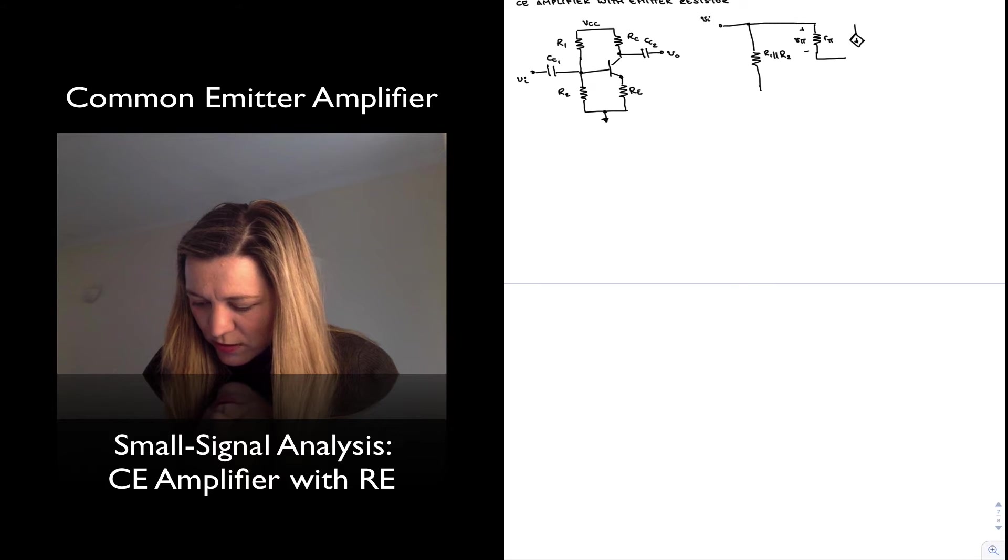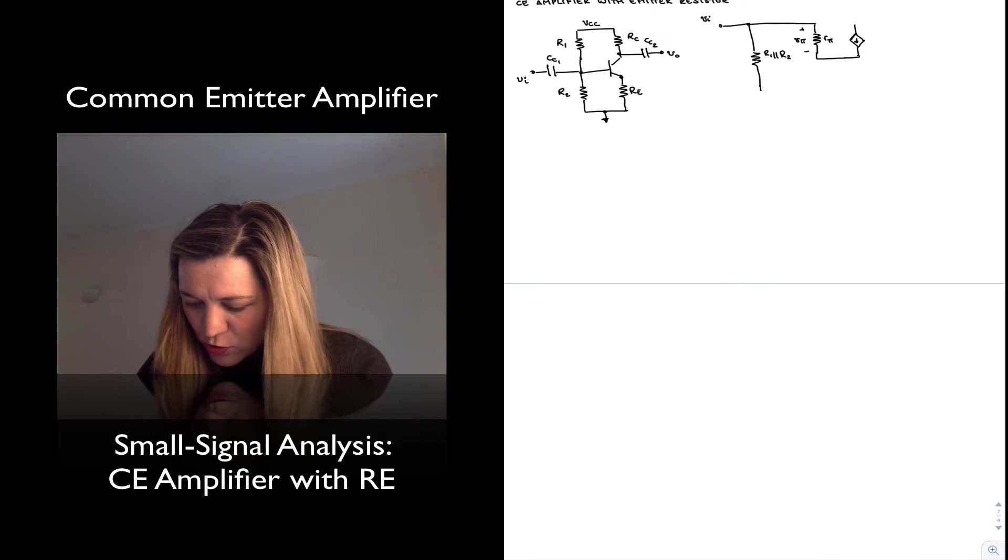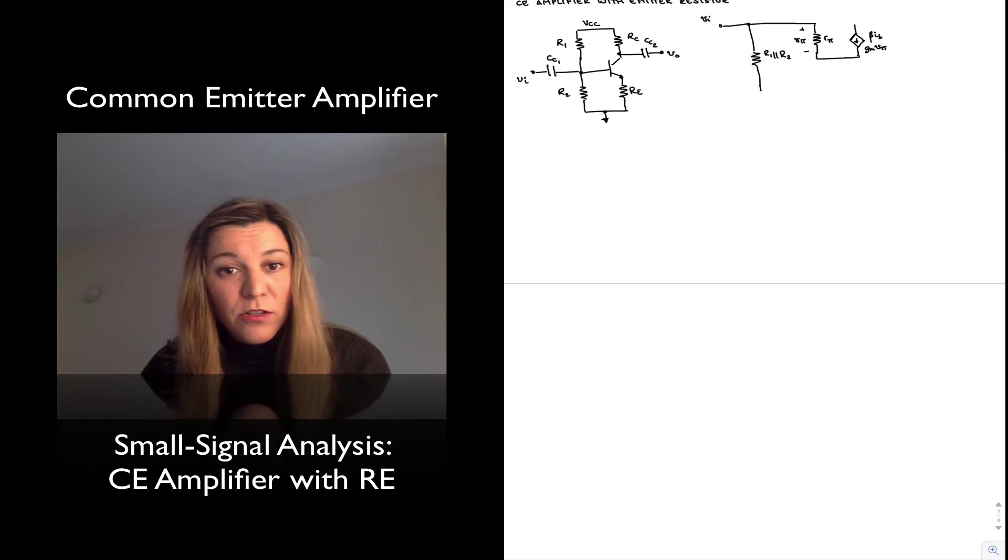From collector to emitter I have my current source which I can label beta*I_B or g_m*V_pi in terms of the current gain or the transconductance.